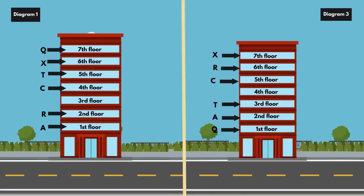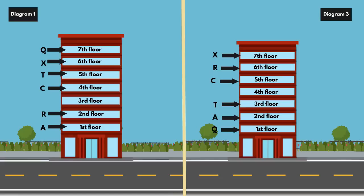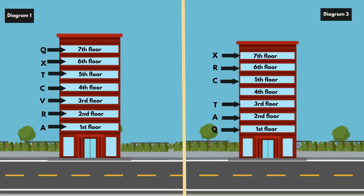Next statement: V is not an immediate neighbor of T. In Diagram 1, the remaining floor is the 3rd floor, so place V on the 3rd floor. T lives on the 5th floor and V on the 3rd floor — V is not an immediate neighbor of T, so this diagram is valid. In Diagram 3, the remaining floor is the 4th floor, so place V on the 4th floor. T lives on the 3rd floor and V on the 4th floor — V is an immediate neighbor of T. So cancel Diagram 3.